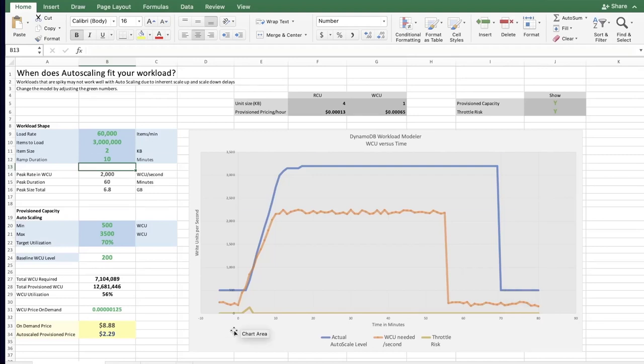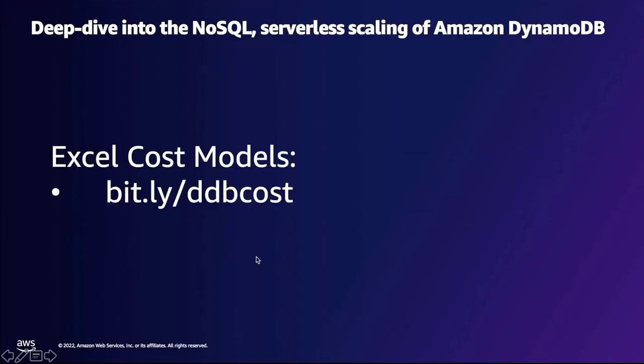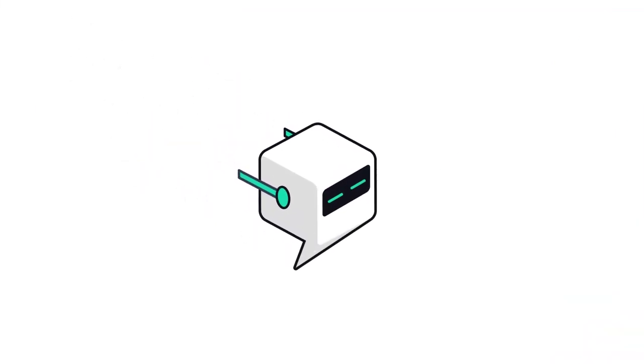If you want to play with this Excel model yourself, you can find it at bit.ly/ddbcost. There's a full write-up and exercises to try, plus another Excel model showing the decision of whether to create a GSI — Global Secondary Index. That wraps up our talk today. Thank you for coming. This was a deep dive into NoSQL serverless scaling of Amazon DynamoDB. See you next time.